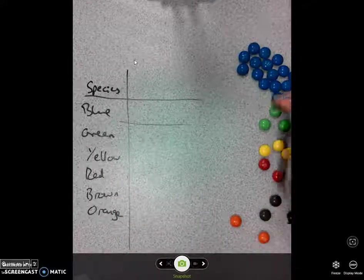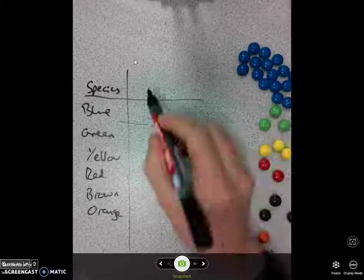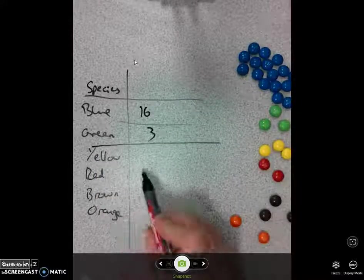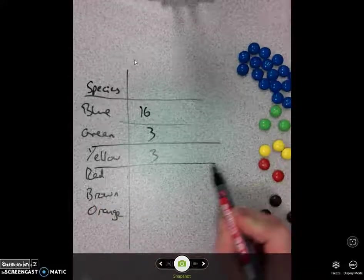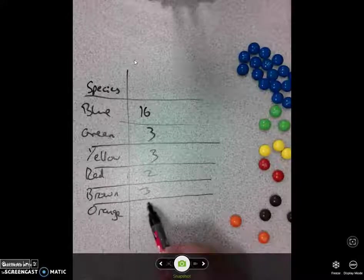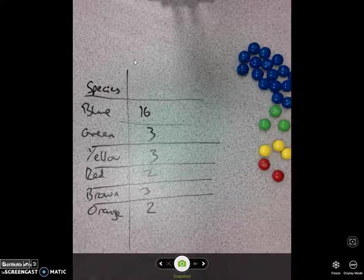There are 16 blues, there are 3 greens, there are 3 yellows, there are 2 reds, there are 3 browns, there are 2 oranges. Okay, let's release these little creatures back into the wilds.